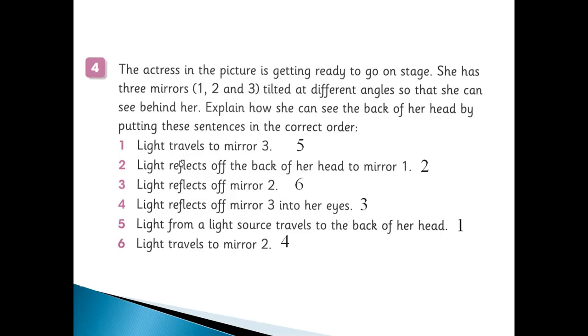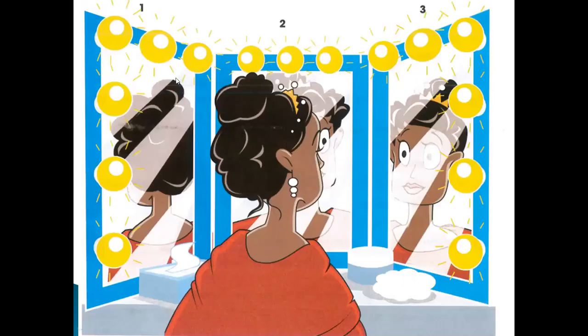Number two: after this, light reflects. When touching the back of her head, then light reflects from there off the back of her head and to mirror one. Mirror number one. Where is mirror number one? This is the mirror number one. It reflects from here. Light coming in, then reflects to the mirror number one.